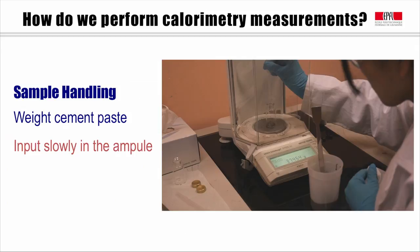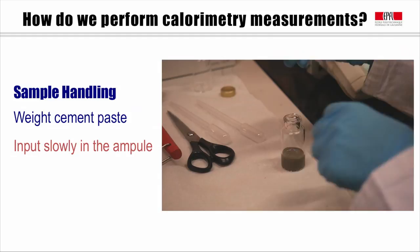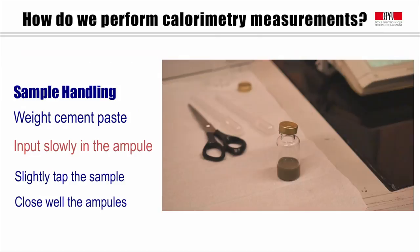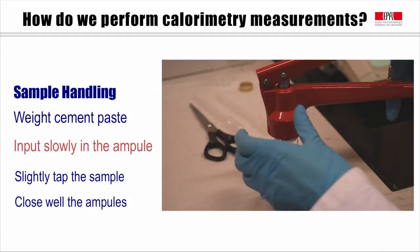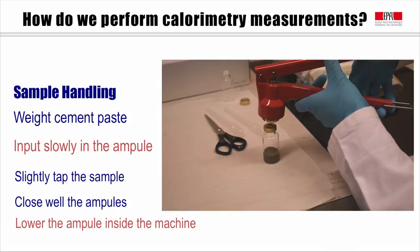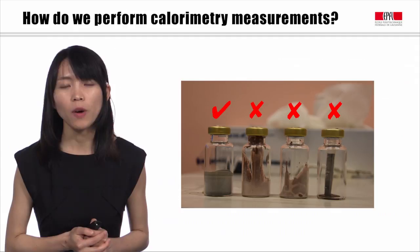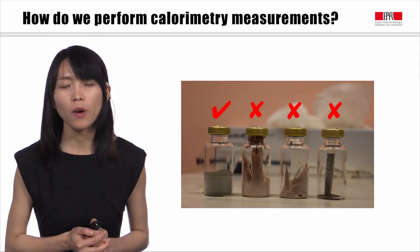After we finish weighing, we slightly tap the sample and then seal the sample with a lid by using a cap clamping tool. Then we can lower the ampoule into the sample side of the channel with the same way as we did for the reference water. Here we have some good and bad examples for the sample preparation. Since the sensor is on the bottom of the ampoule, it is better to put the sample to the bottom to make sure that the heat generated is completely collected by the sensor.